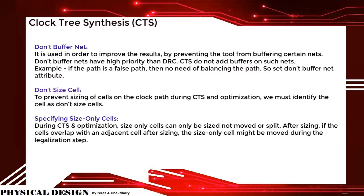Don't-buffer net is used to improve results by preventing the tool from buffering certain nets. Don't-buffer nets have higher priority than DRC. CTS does not add buffers on such nets. Example: if the path is a false path, there is no need to balance it, so set the don't-buffer net attribute. Don't-size cell: to prevent sizing of a cell on the clock path during CTS and optimization, identify the cell as a don't-size cell. Size-only cells can only be sized, not moved or split. After sizing, if cells overlap with an adjacent cell, the size-only cell might be moved during the legalization step.